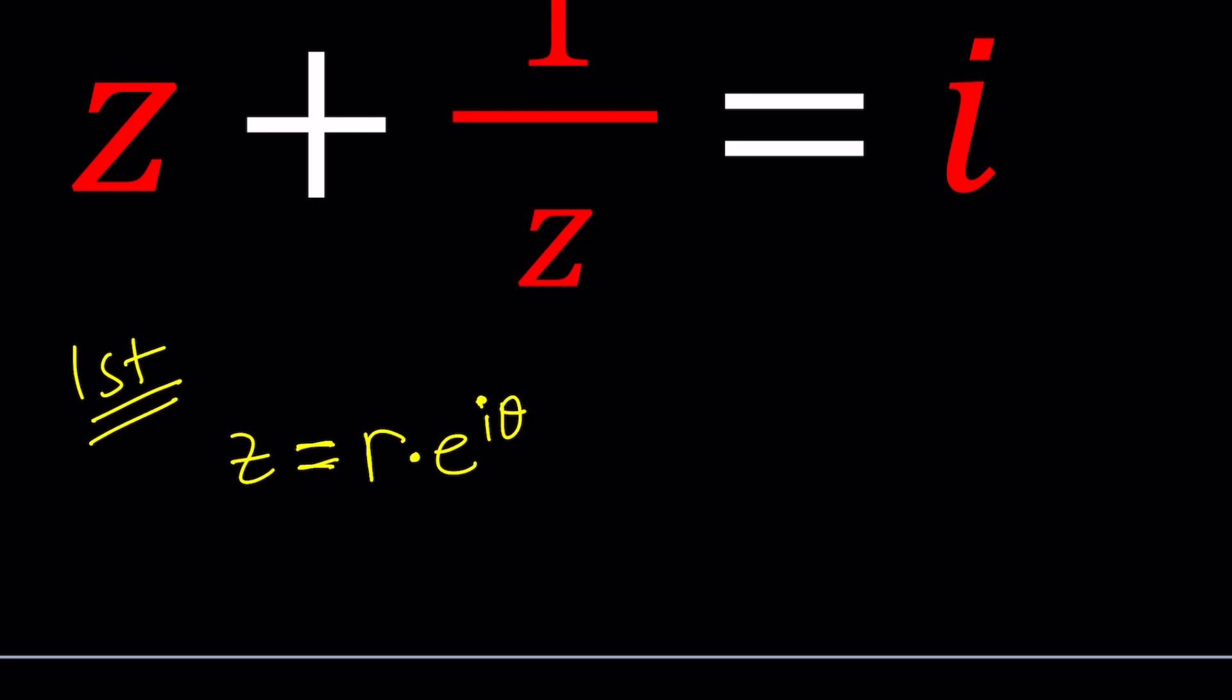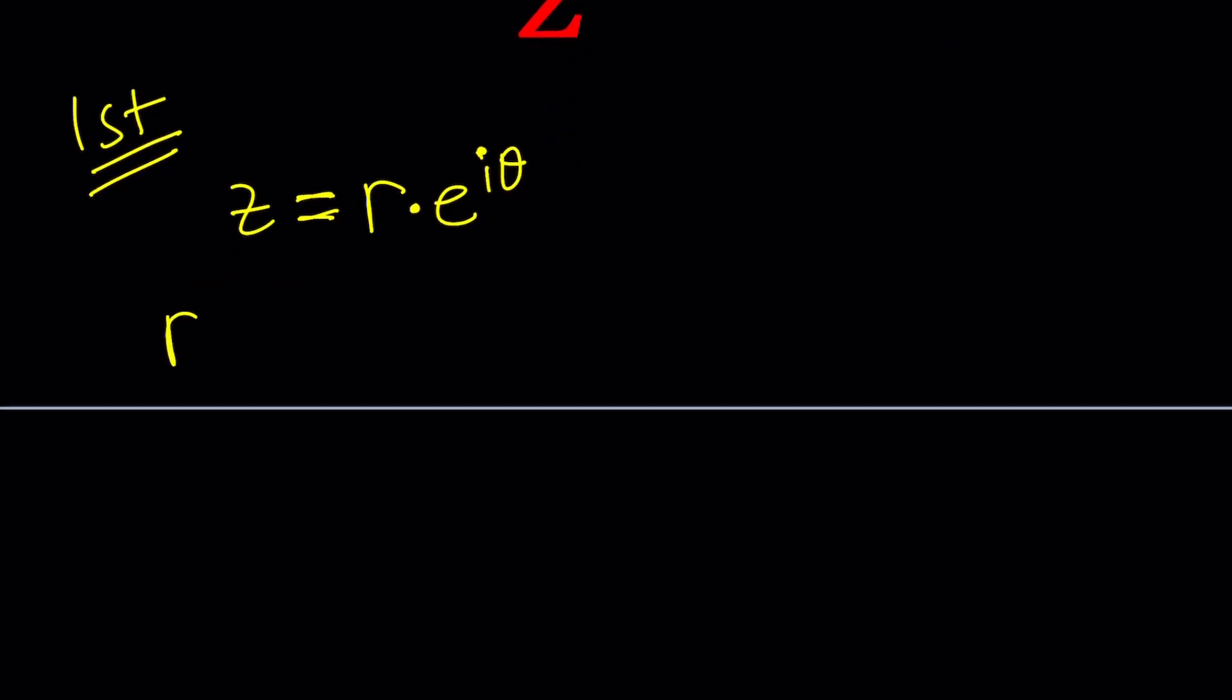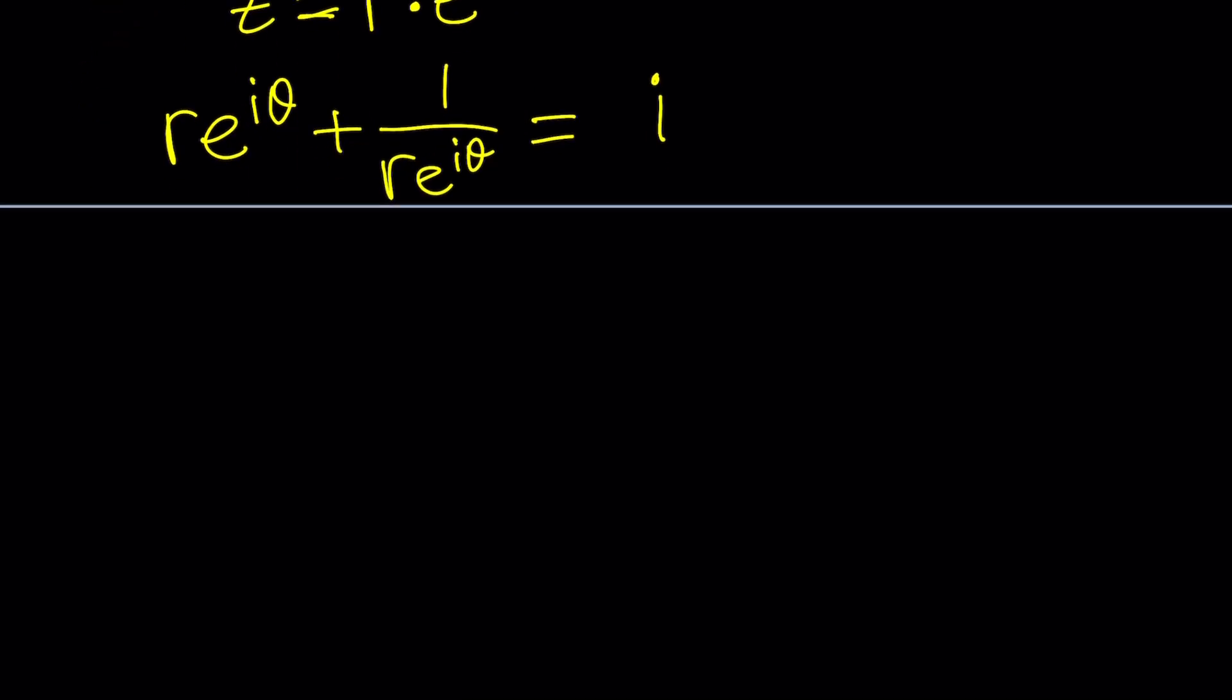Let's go ahead and try to keep it simple and replace Z with R times e to the iθ. Now what happens if you do that? We get R times e to the iθ plus 1 over R times e to the iθ equals i. Now we can make a common denominator, multiply these together: R² e to the 2iθ plus 1. And you can cross multiply here. That's going to give you Ri e to the iθ.